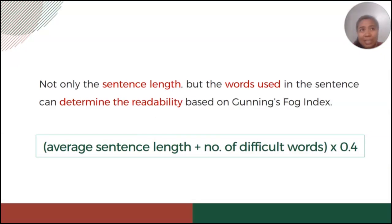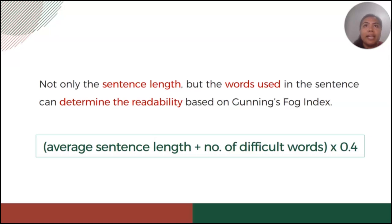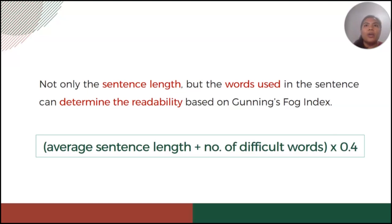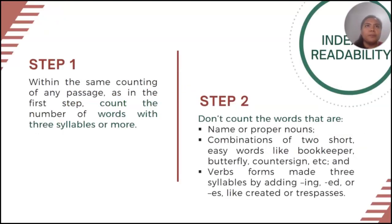Not only the sentence length, but the words used in the sentence can also determine the readability based on Gunning's Fog Index. We have this formula: average sentence length plus the number of difficult words, and the sum to be multiplied by the constant 0.4.